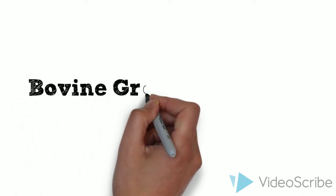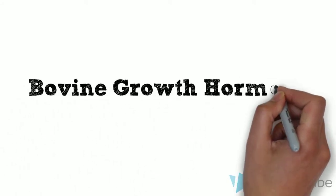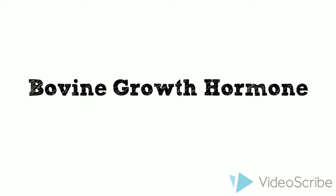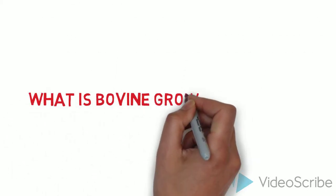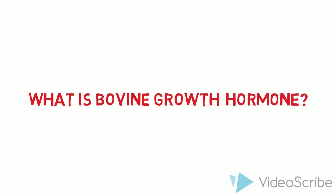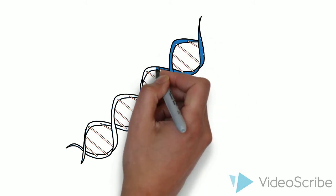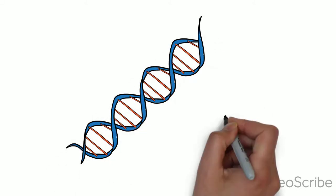Bovine growth hormone: What is bovine growth hormone? Recombinant bovine growth hormone, or RBGH, is a genetically engineered version of the growth hormone that is found in dairy cattle.